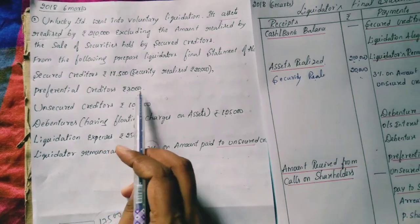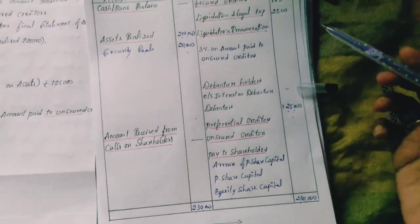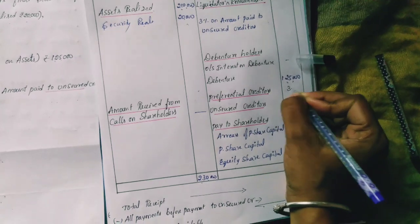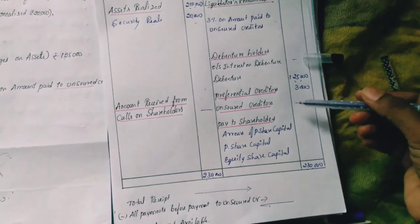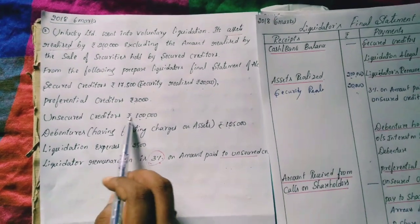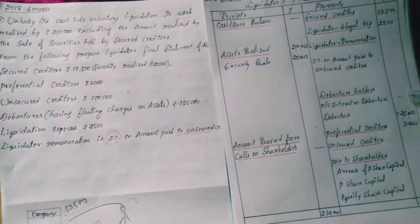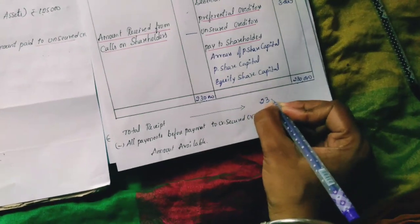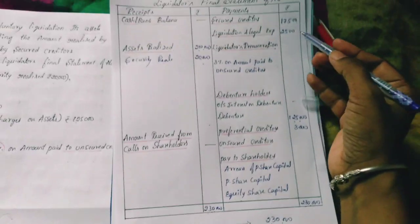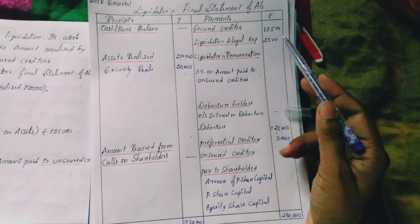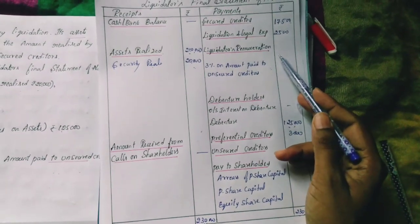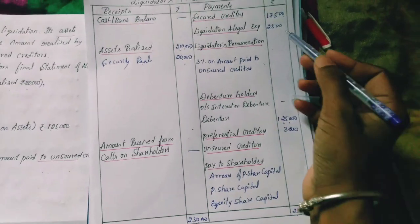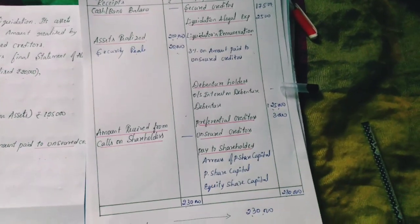Preferential creditors are Rs.3,000. The amount paid so far: Rs.2,30,000 total received, minus Rs.17,500 (secured creditor), minus Rs.2,500 (surplus), minus Rs.1,25,000 (debentures), minus Rs.3,000 (preferential creditors). Now calculate the amount available for unsecured creditors.